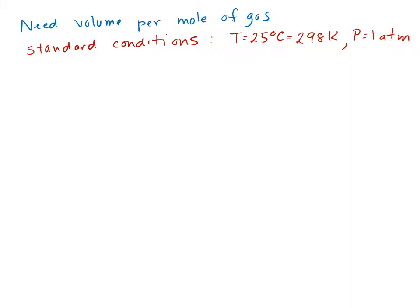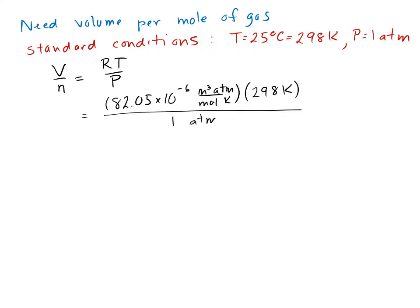The volume per mole of gas, if you go back and look at the ideal gas law PV equals nRT, volume per mole is V over n. And then if we rearrange the ideal gas law, we see that that is equal to RT over P. And so now if I substitute the values in for RT over P under these conditions, I have 82.05 times 10 to the minus 6 cubic meters atmospheres per mole Kelvin, my temperature is 298 Kelvin, and my pressure is 1 atmosphere. That gives me 0.0245 cubic meters per mole.